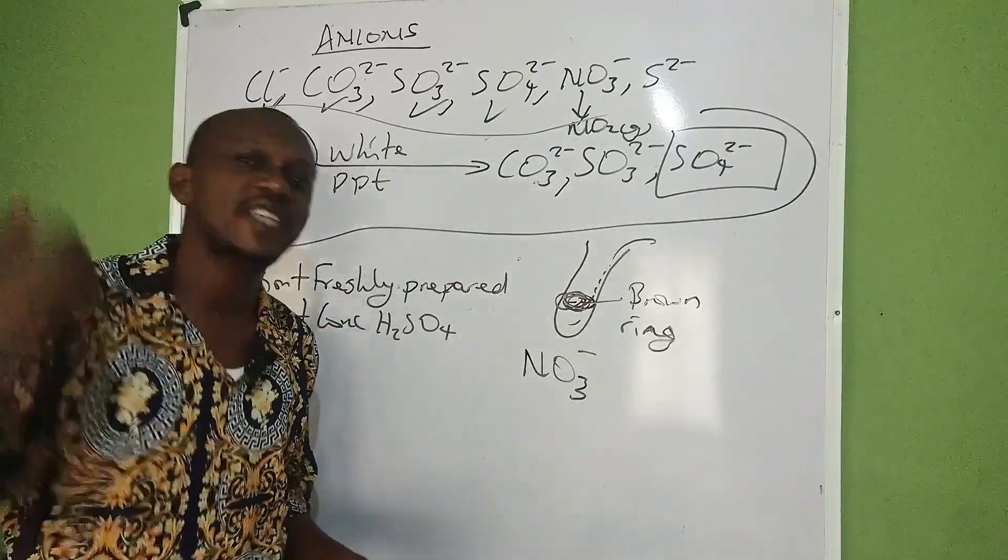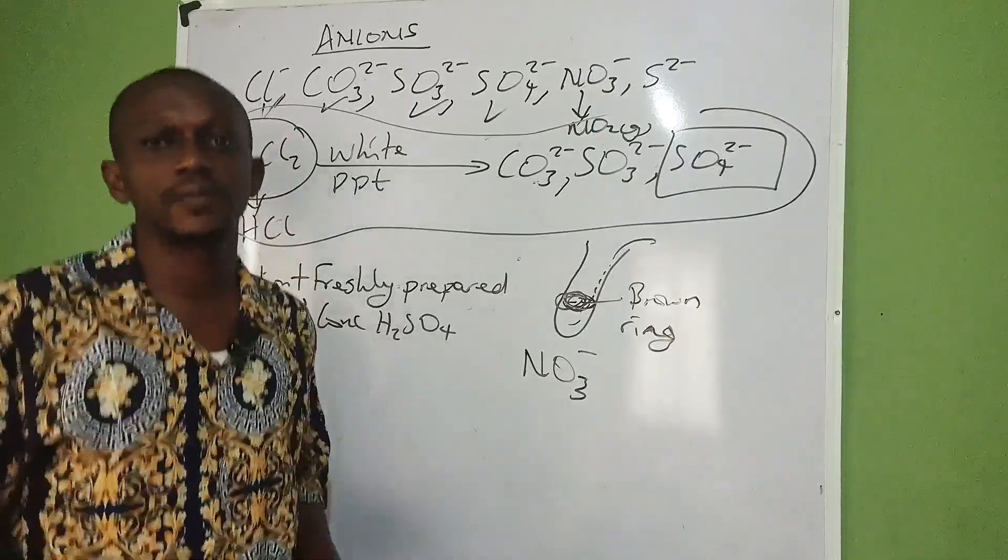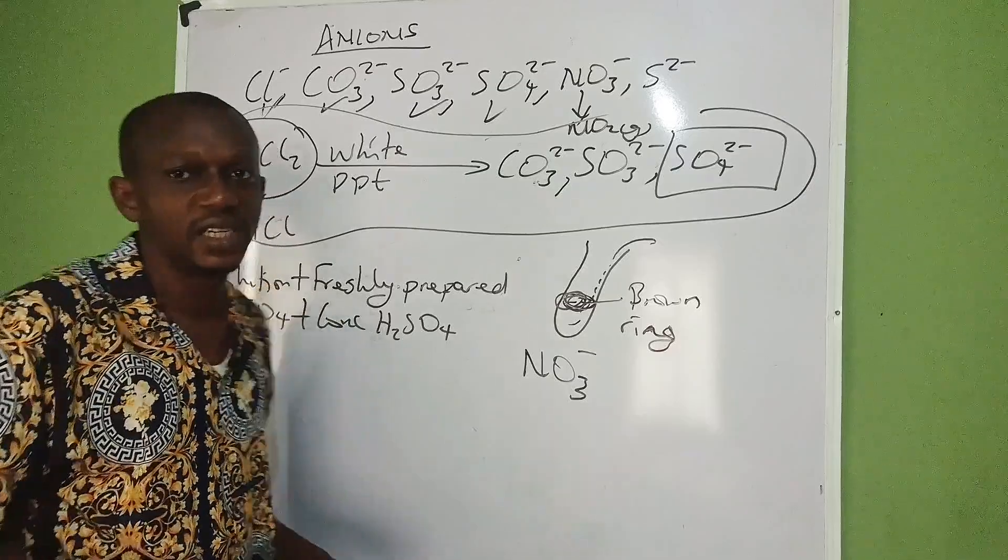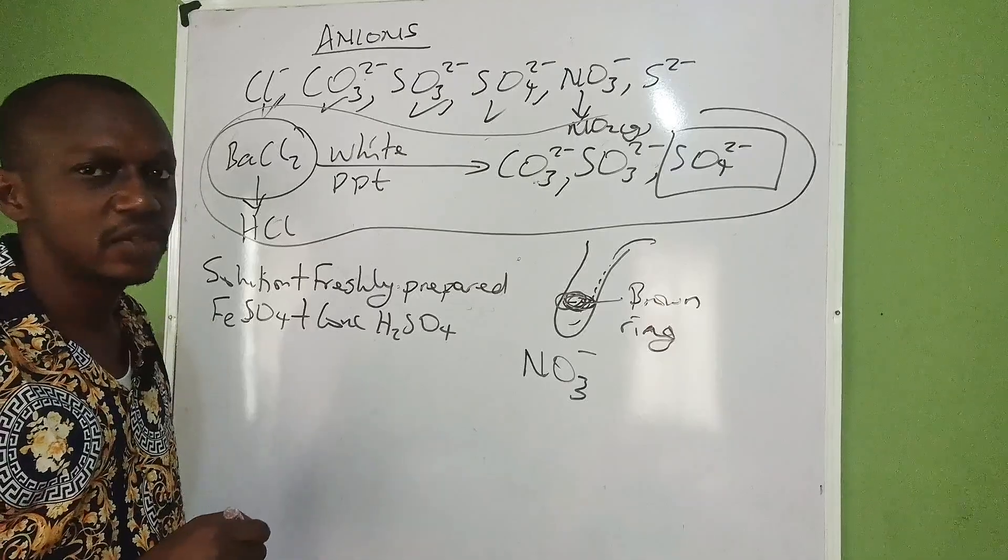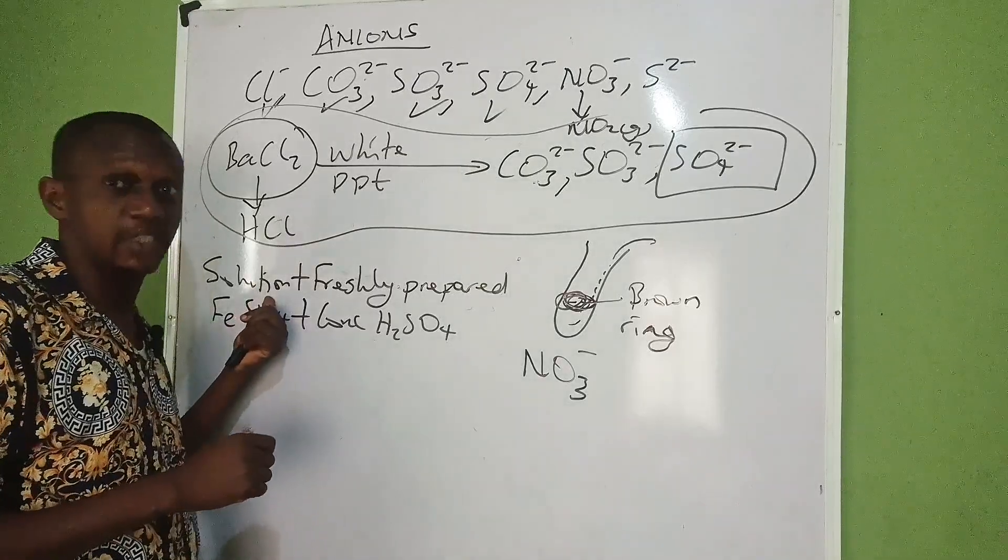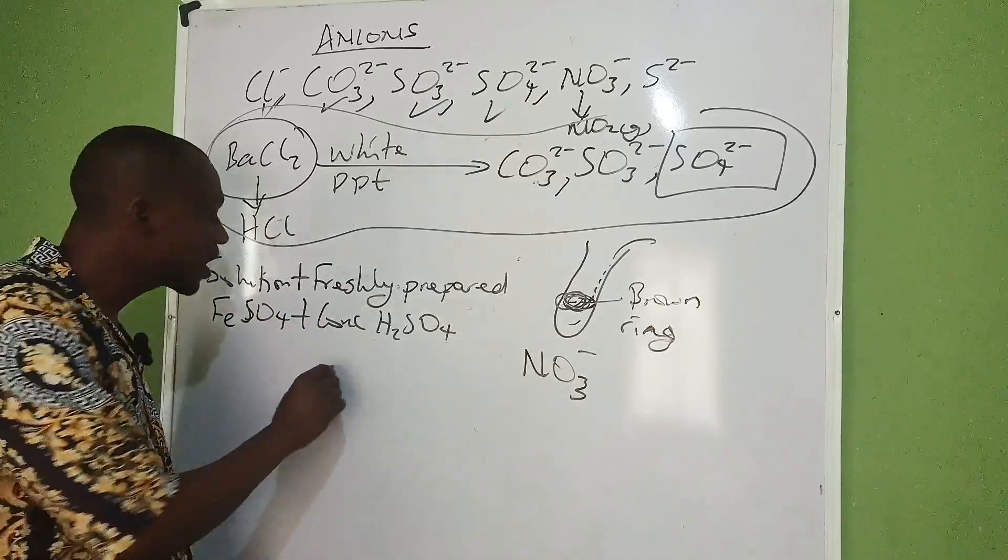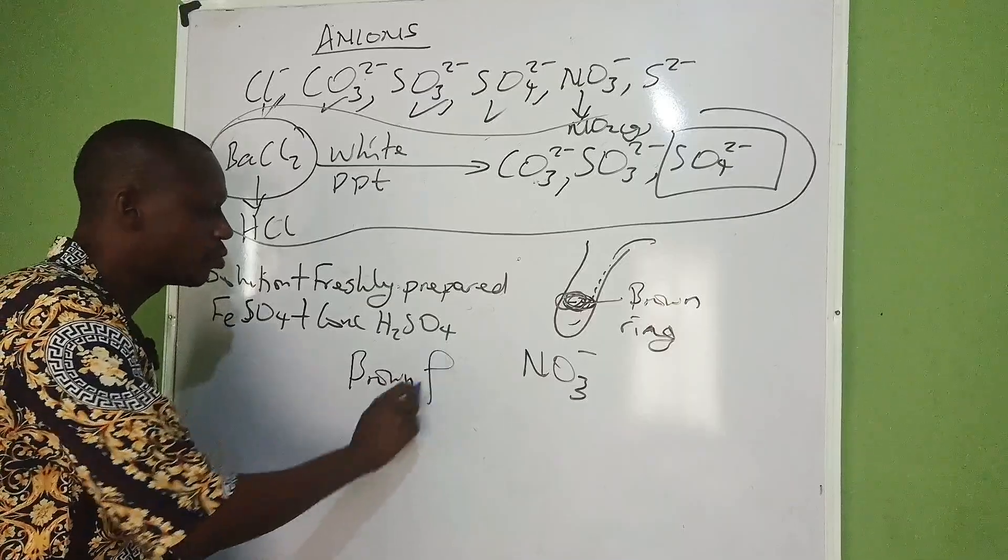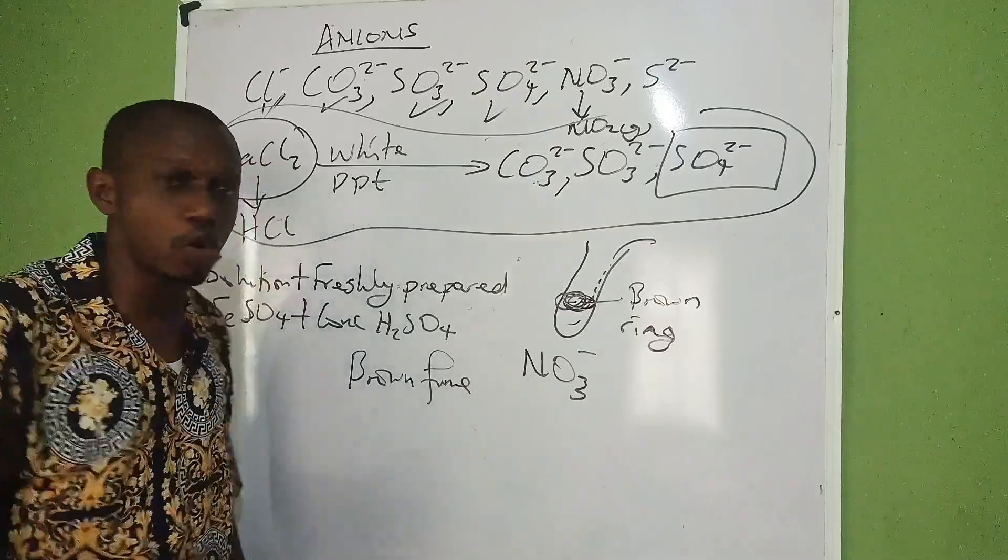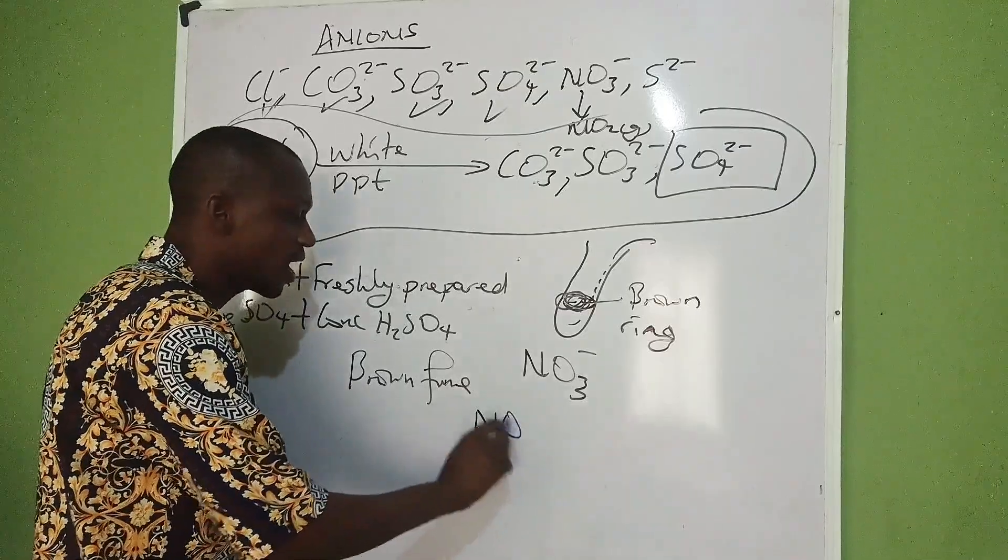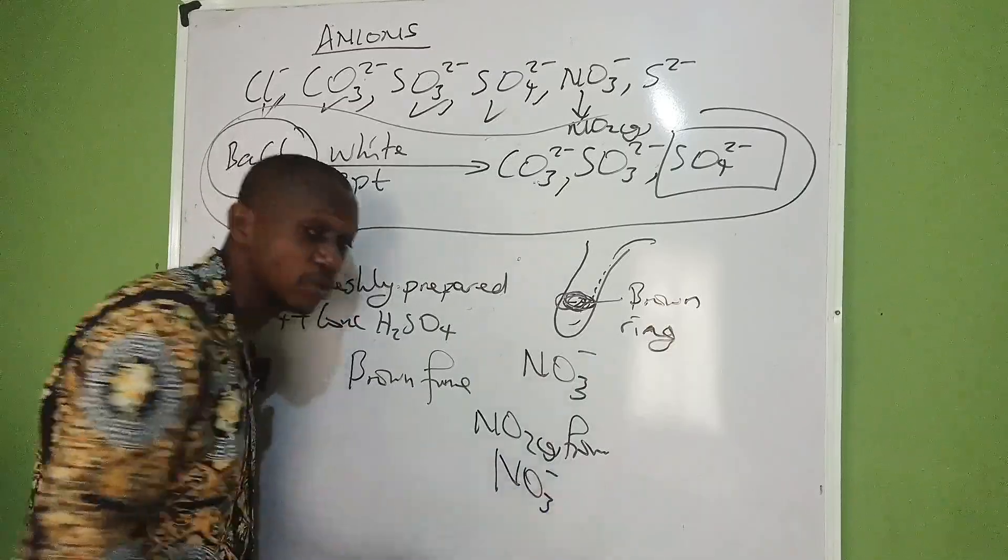The second way is testing using the gas. Before you can get gas, you have to heat the solution or you add acid to a solid. You heat the solution directly or add acid and heat. After that, you get a brown fume. After getting a brown fume, you are going to say NO₂ gas from NO₃⁻.